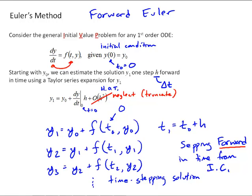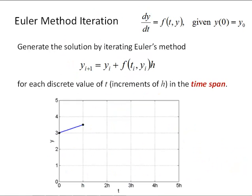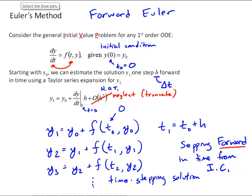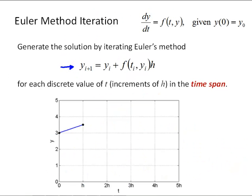Looking more at that solution scheme, we generate the solution stepping forward in time with the general algorithm: y_{i+1} is equal to y_i plus h times our function evaluated at t_i and y_i. Note that we must multiply by h in each of these time steps. We do this for each discrete value of t_i, in increments of h — our delta t — however long we want to solve the equation for, which we'll call the time span of the solution.